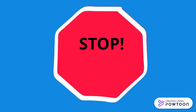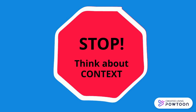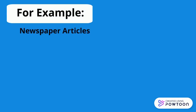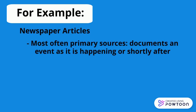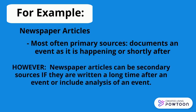Stop. Think about context. A source could be both a primary or a secondary source, depending on the context of your research. A newspaper article is most often considered a primary source because it documents an event as it happens or shortly thereafter. However, if an article is written a long time after an event, or if it includes analysis of the event, then it's a secondary source.